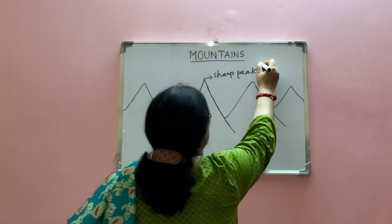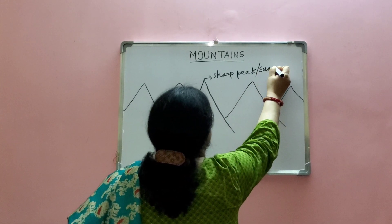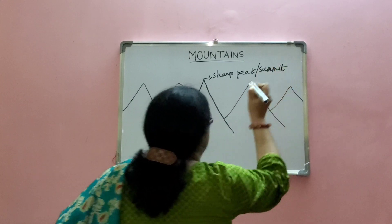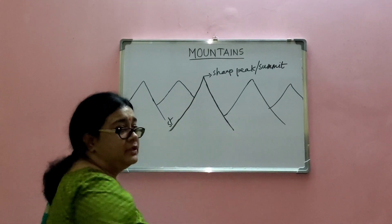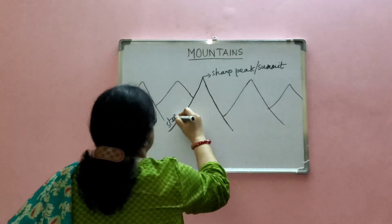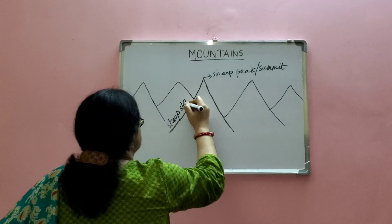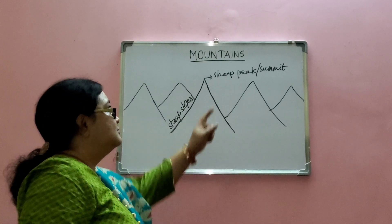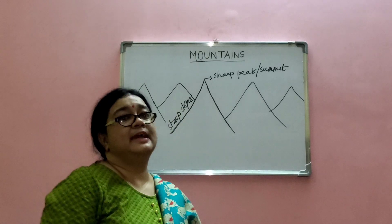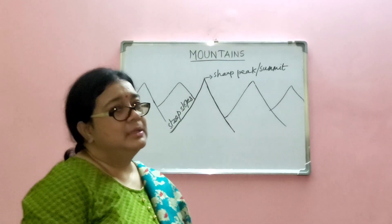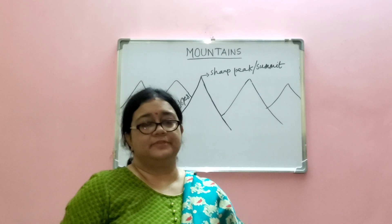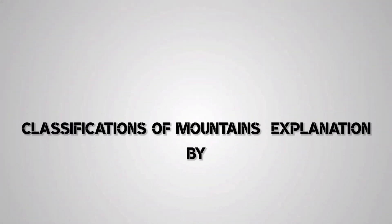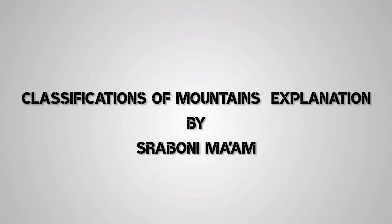A sharp peak is also known as a summit, and steep slopes are the slopes of the mountain. These two features — the sharp peak and the steep slopes — are essentially the characteristic features of a mountain. Mountains are topographic features on the earth's surface.